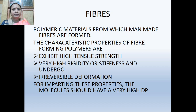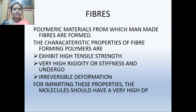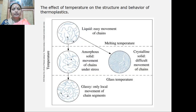Fibers are polymeric materials from which man-made fibers are formed. The characteristic properties of fiber-forming polymers are: they exhibit high tensile strength, very high rigidity or stiffness, and undergo irreversible deformation. To impart these properties, the molecule should have a very high degree of polymerization (DP).